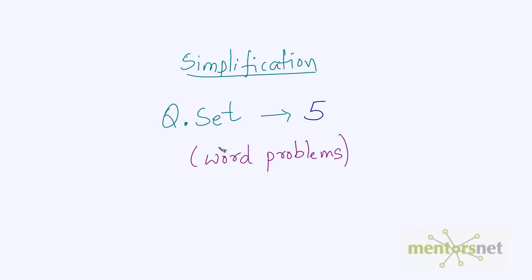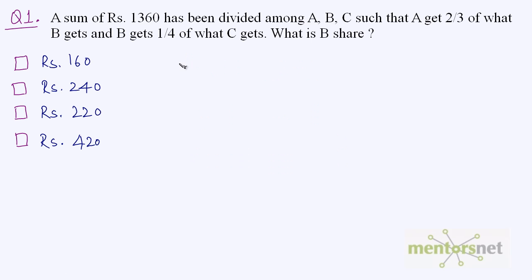This is question set video number 5 on the chapter simplification, and we will be doing 5 to 6 word problems in this video. Let's get started with the first question. A sum of rupees 1360 has been divided among A, B, and C such that A gets two-third of what B gets and B gets one-fourth of what C gets. What is B's share?